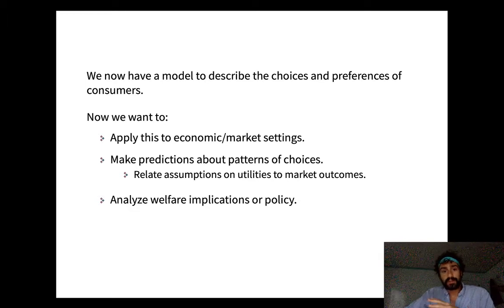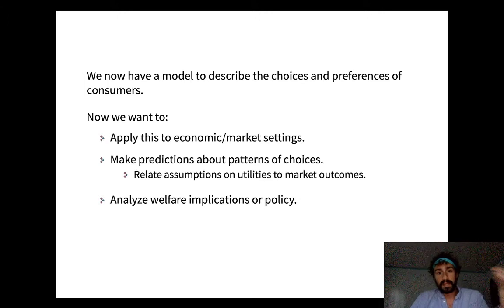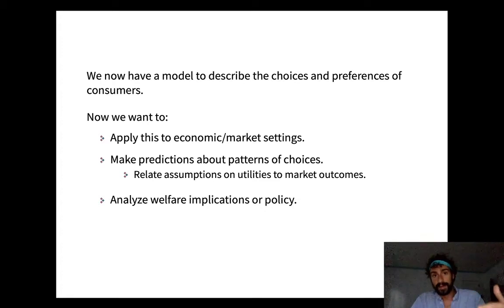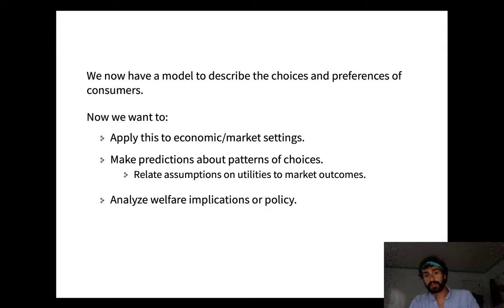We assume the decision maker maximizes her utility, choosing the bundle that renders the highest utility given the budget set. Now we're going to analyze what that actually means — what it looks like to maximize utility over a budget set. We'll then apply this model to economic and market settings by making predictions about how prices and income affect the consumer's decision. We can also talk about welfare implications: is the consumer better off under one set of prices versus another? That could motivate policy or regulation.